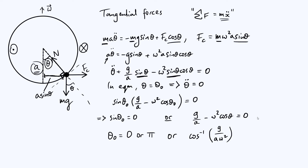The easiest one to think about is theta equals pi, which corresponds to the bead being all the way at the top of the hoop. Is it going to be stable or unstable? We can see pretty clearly that it's always going to be unstable. No matter how quickly the hoop is rotating, if you give that bead a small perturbation from equilibrium, it's not going to come back — it's going to get further away — because gravity is pulling it down and the centrifugal force is pulling it out and to the right. Neither of those acts to restore equilibrium. So the top position is always an unstable equilibrium.